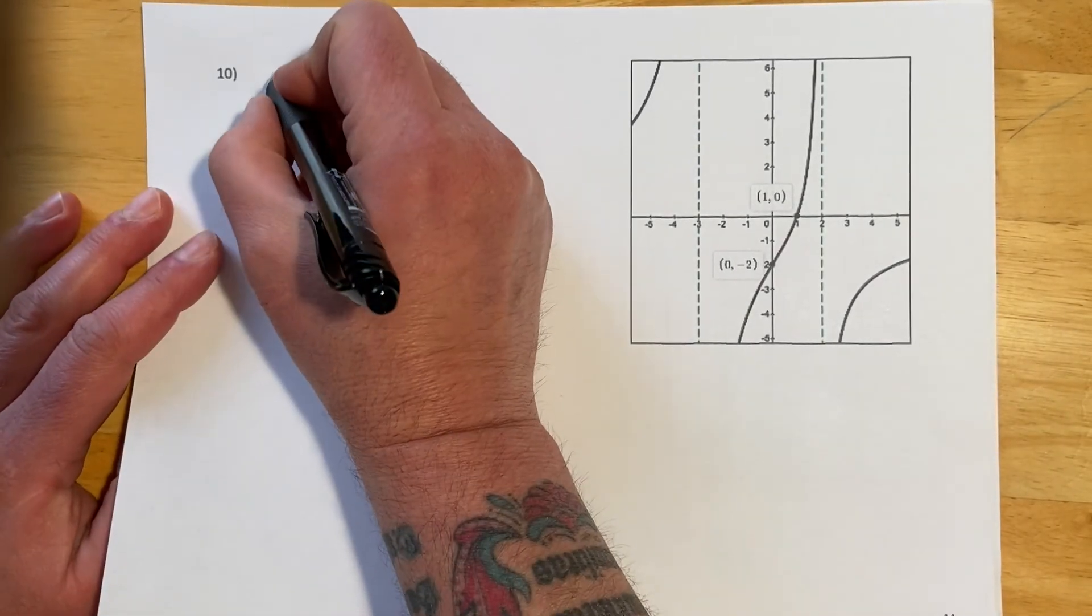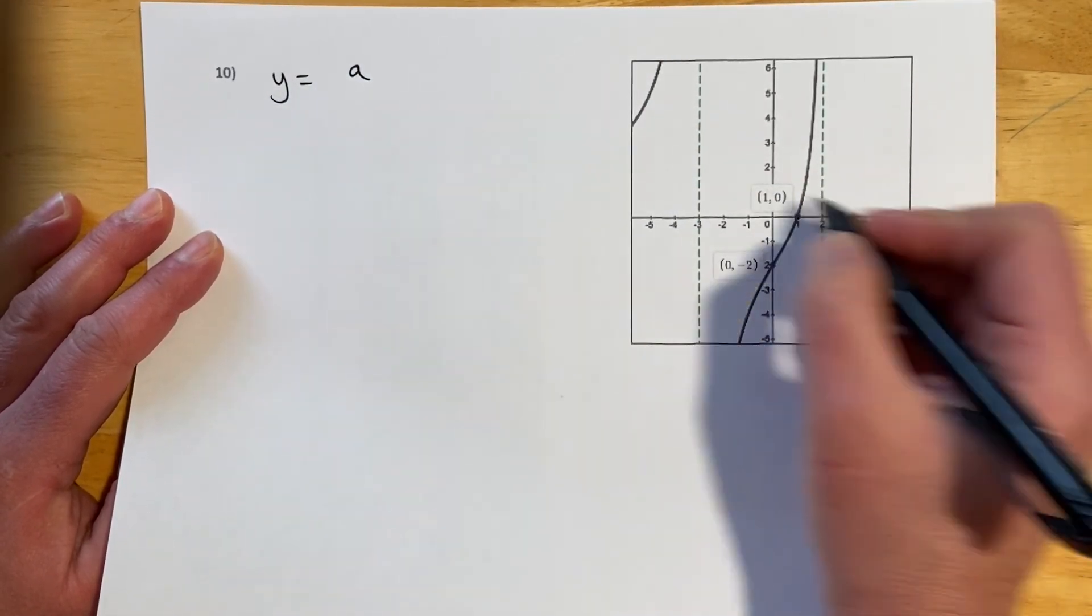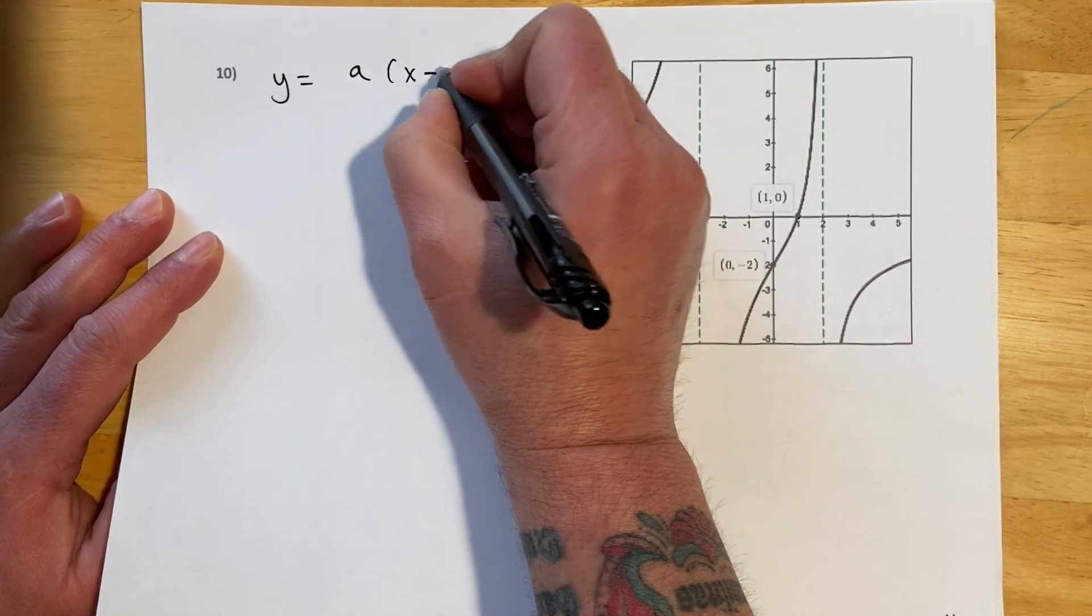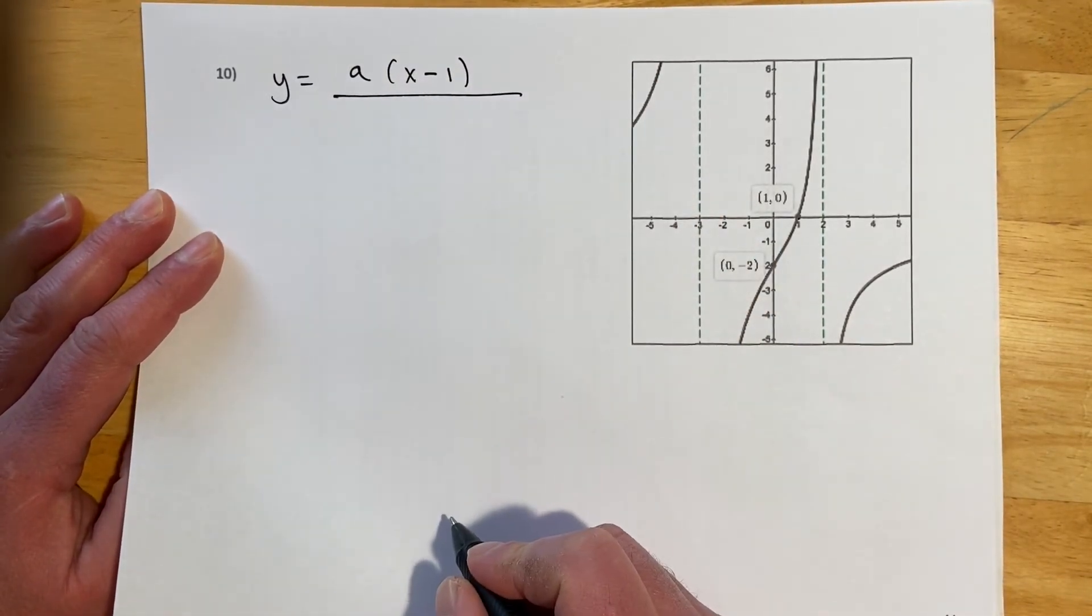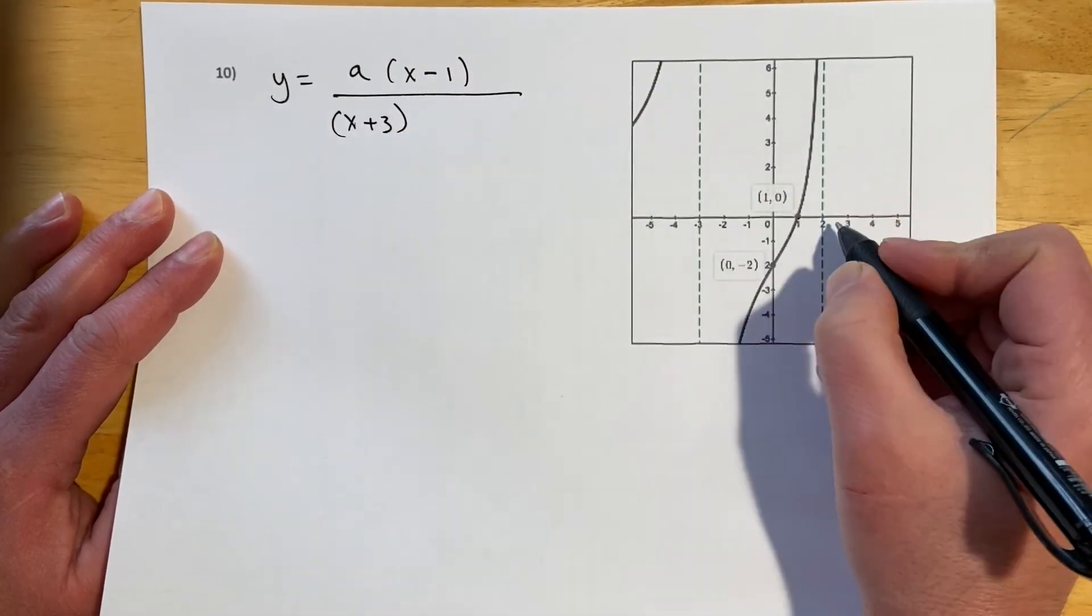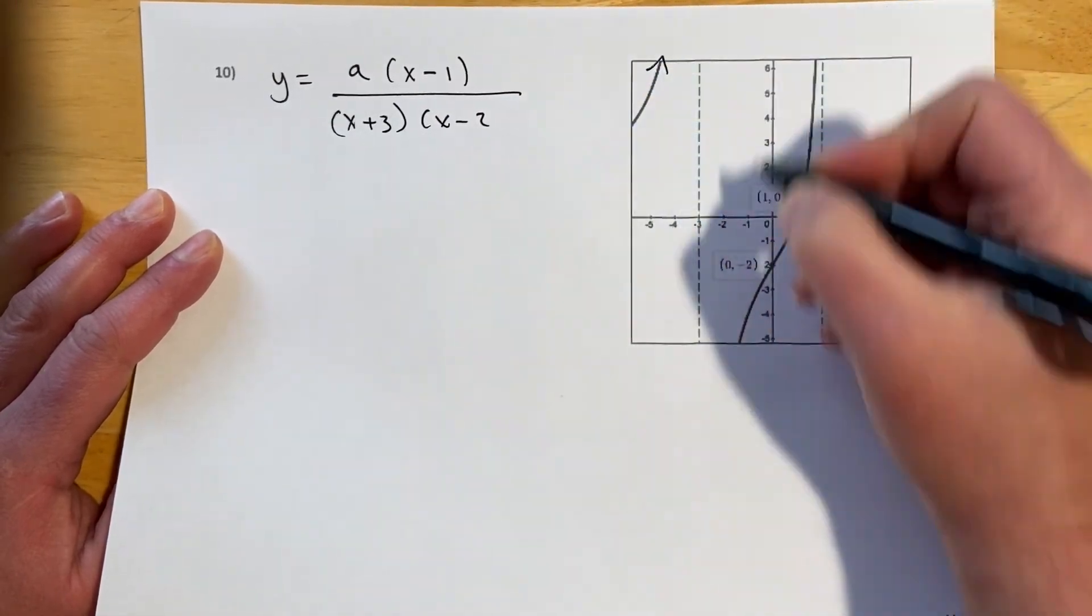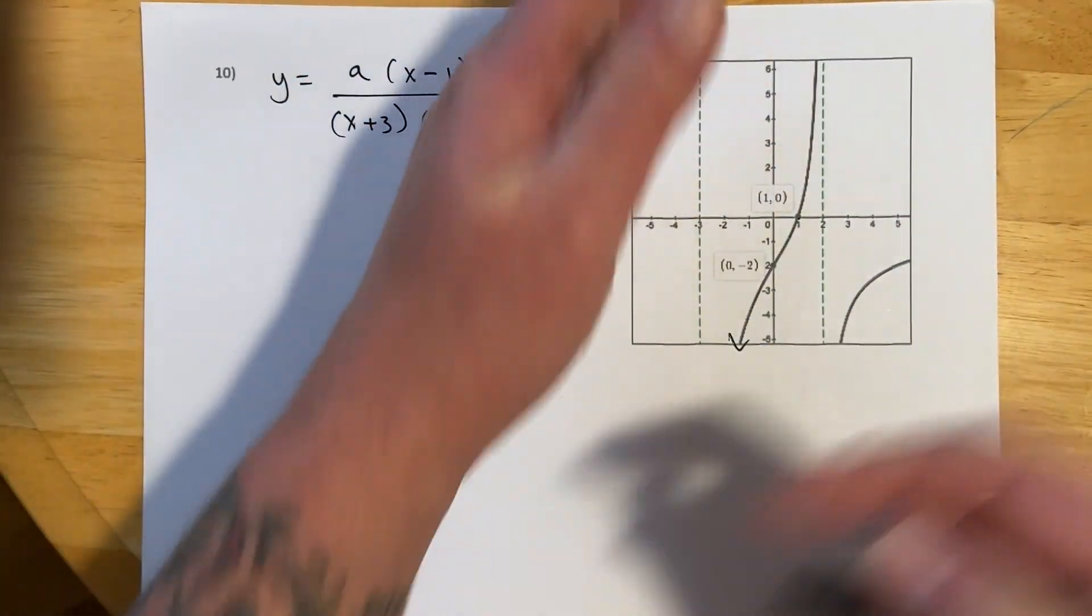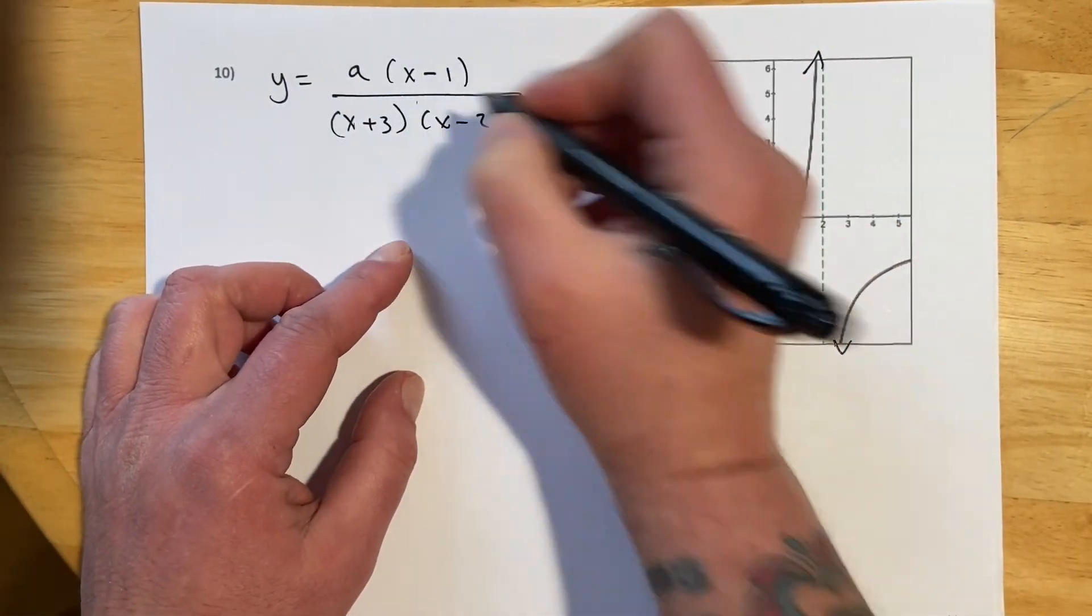Okay, and then this last one, we're going to have Y equals A. Looks like we're crossing at 1. So that means I have a factor of X minus 1, again to the first. And then negative 3, so X plus 3. And positive 2, so X minus 2. Again, this is up, this is down, so they're opposite. And same here, up and down, opposite. So I know these are both to the first power.